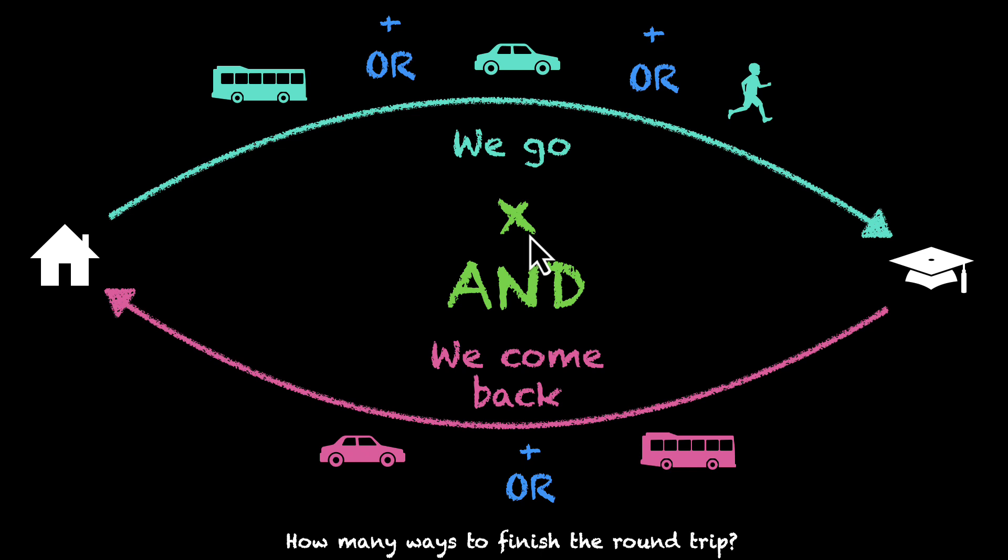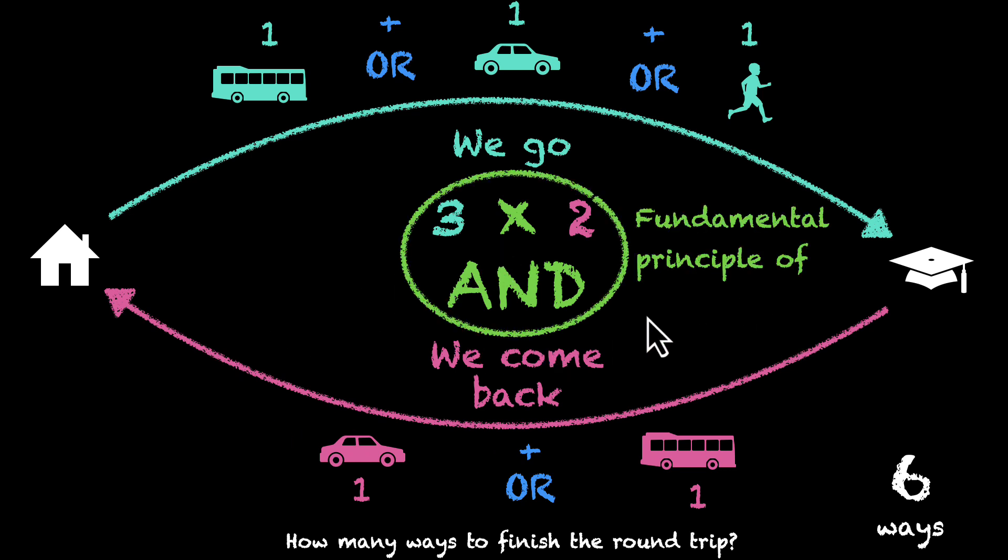So we put a multiplication sign here. And if we now count the number of ways, we have 1, 1, 1. In fact, 1 and 1 here. But 1 plus 1 plus 1. So we have 3 ways to go, and 1 plus 1, which means 2 ways to come back. And 3 times 2 gives us 6 ways. So we have a total of 6 ways of making a round trip from home to school and back. And this thing here, what we just did, that's called the fundamental principle of counting.